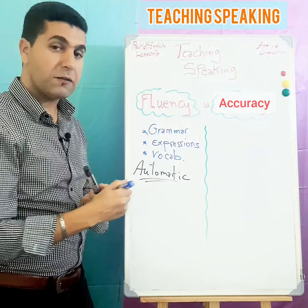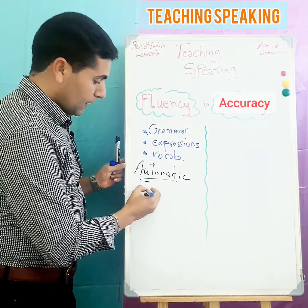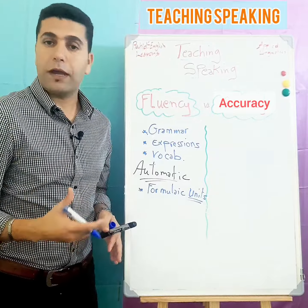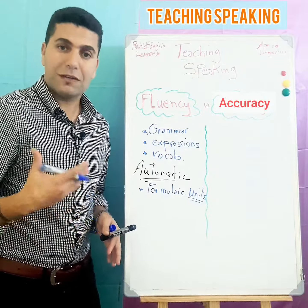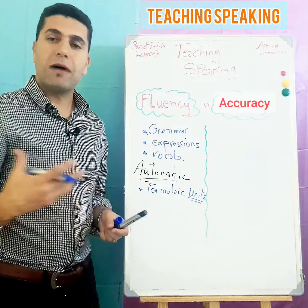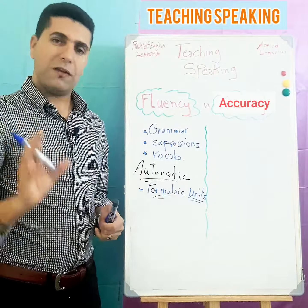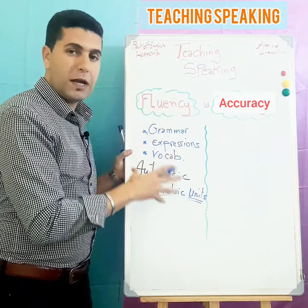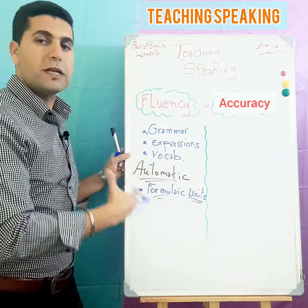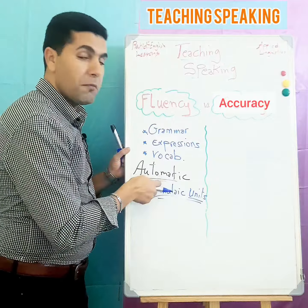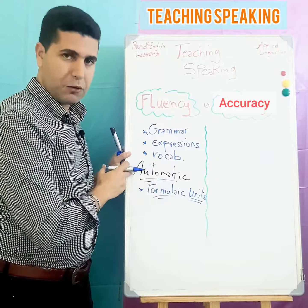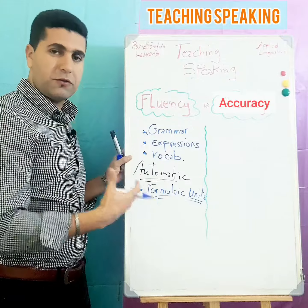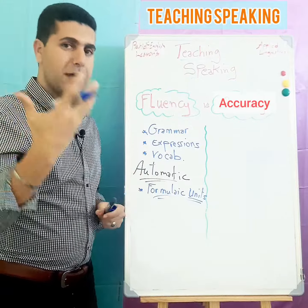To be fluent, a person should also have mastery of what we call formulaic units — things like phrasal verbs, collocations, routine expressions, and idiomatic expressions. The key word here is 'automatic': automatic access to formulaic units, grammar, expressions, and vocabulary without reflection or thinking.